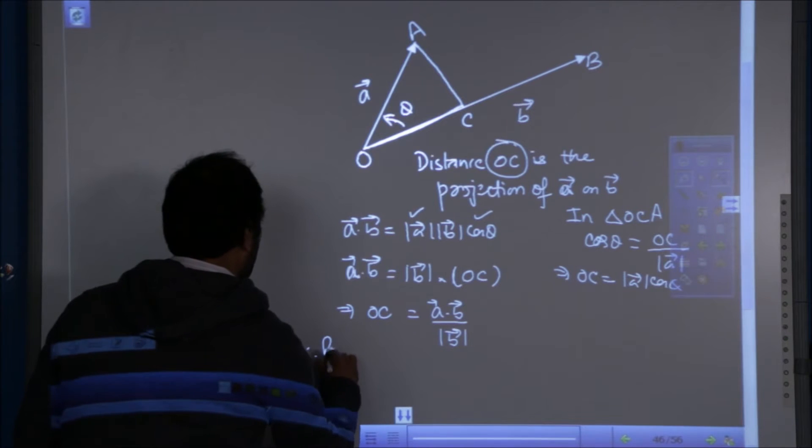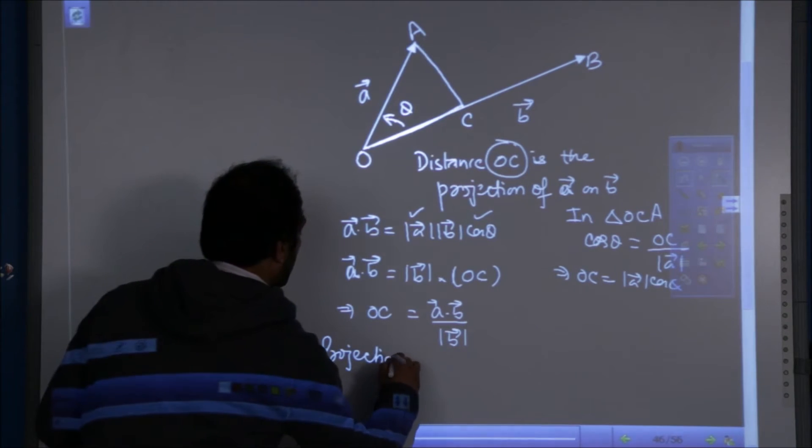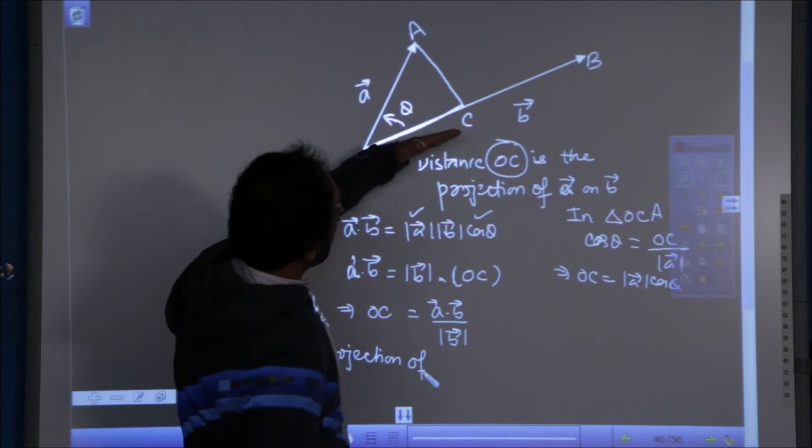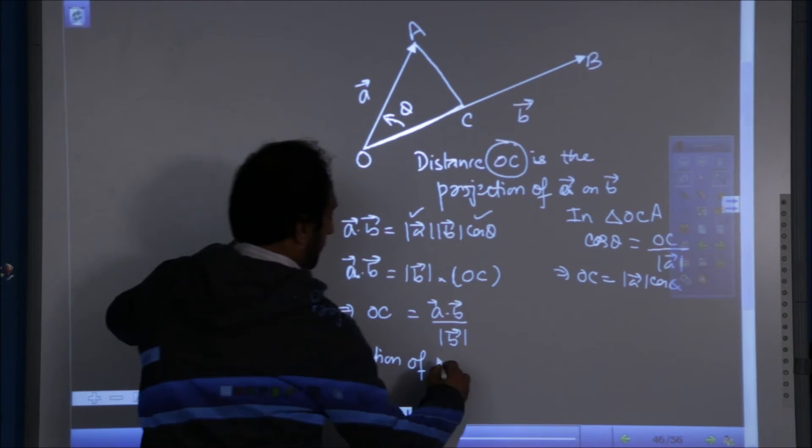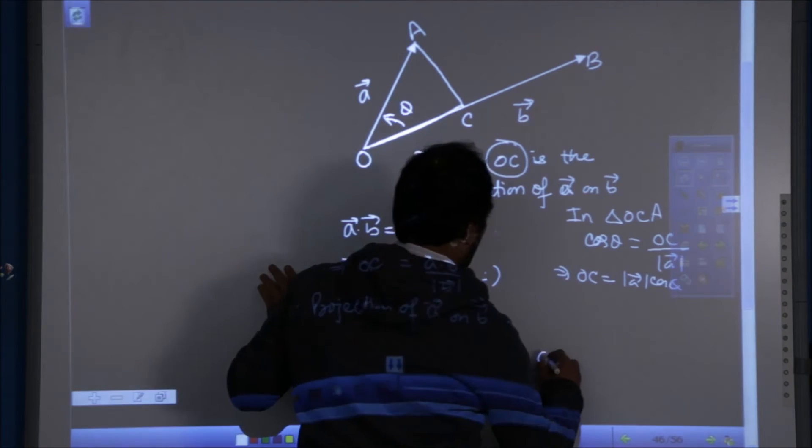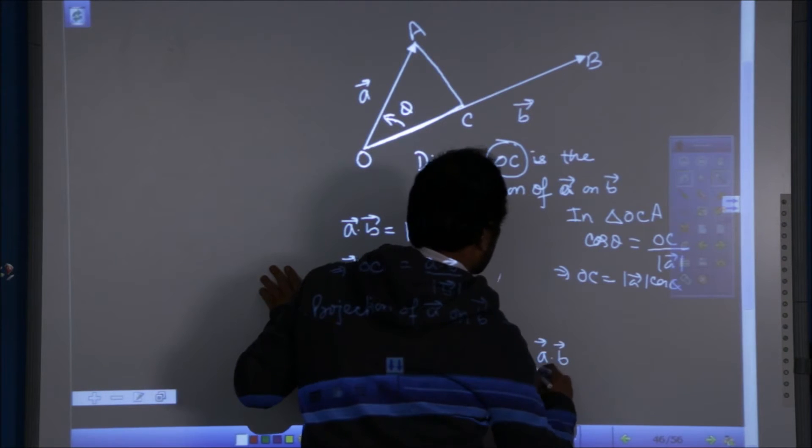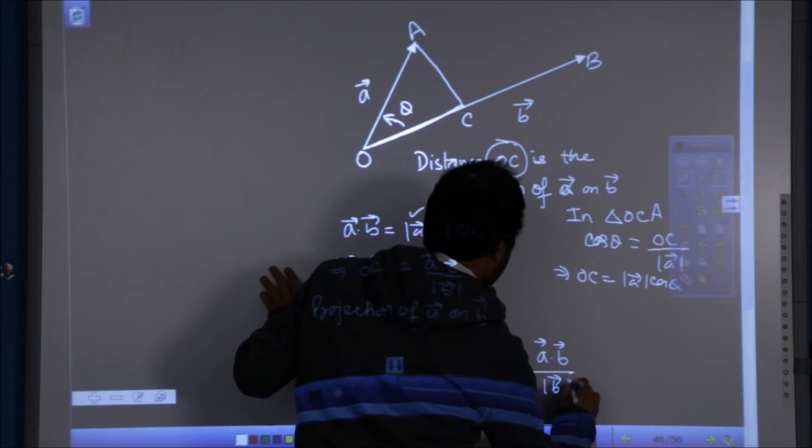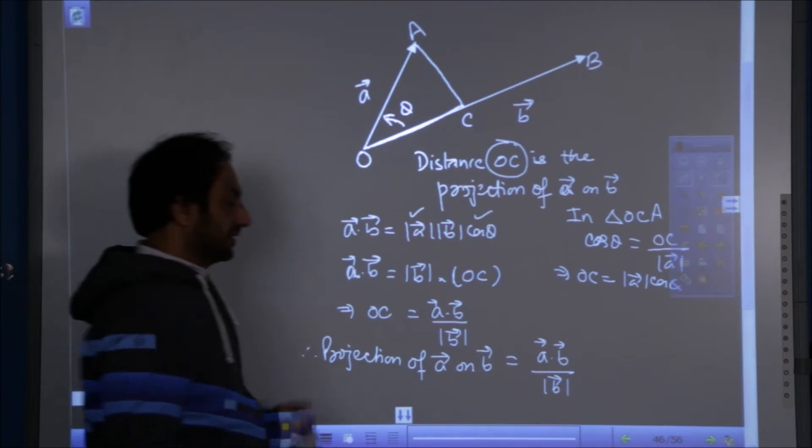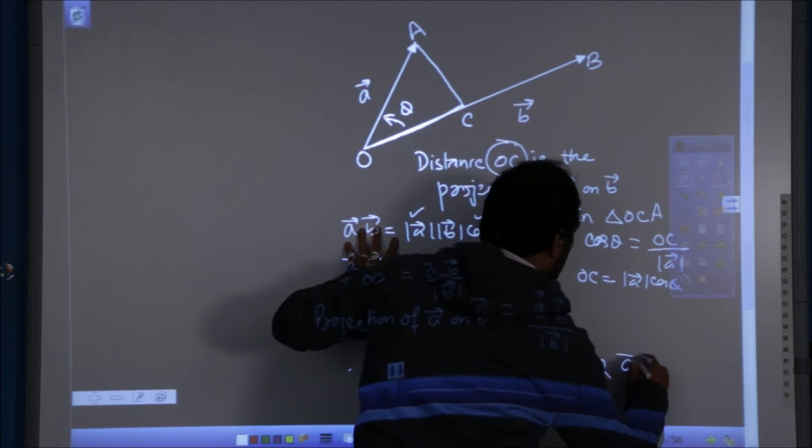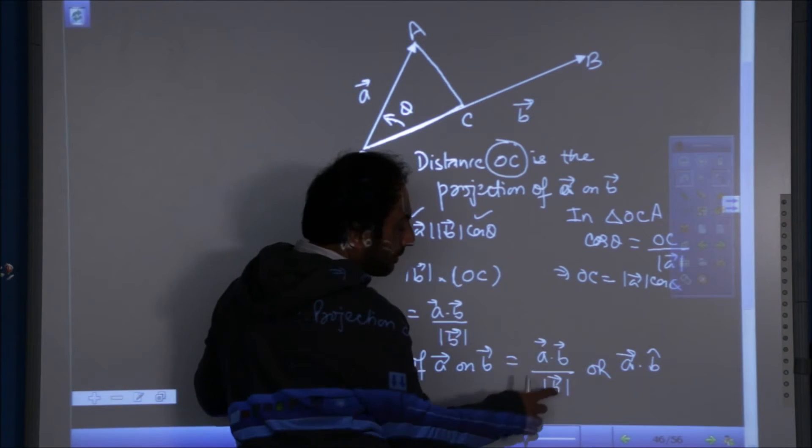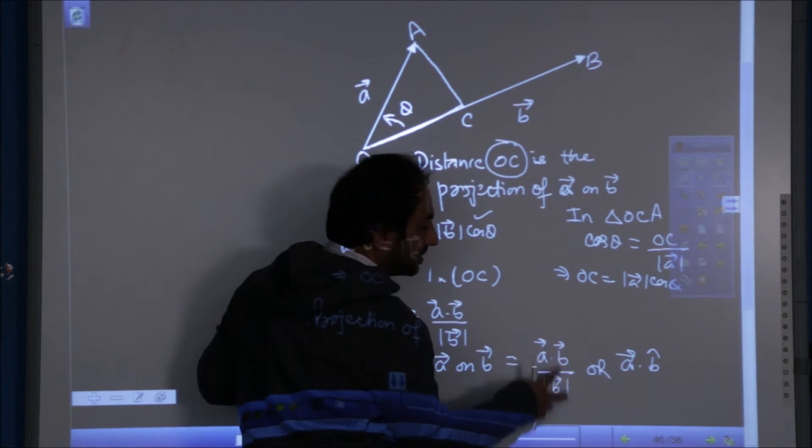Therefore, projection of vector A on B, which is OC, is equal to A dot B divided by magnitude of B vector. Or we can also consider this as A dot B cap, because vector B upon magnitude of B is the unit vector.